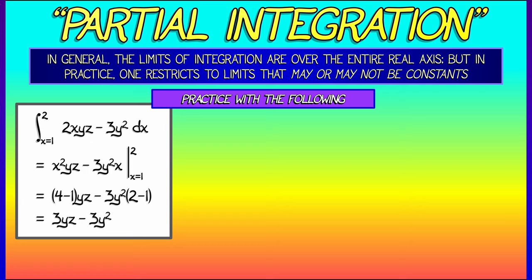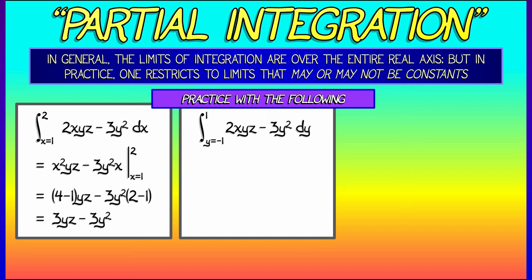Now let's change this up a little bit. Let's keep the same integrand but now integrate with respect to y as y goes from negative 1 to positive 1. That means we're considering x and z as constants. When we anti-differentiate with respect to y, we get xy²z minus y³.